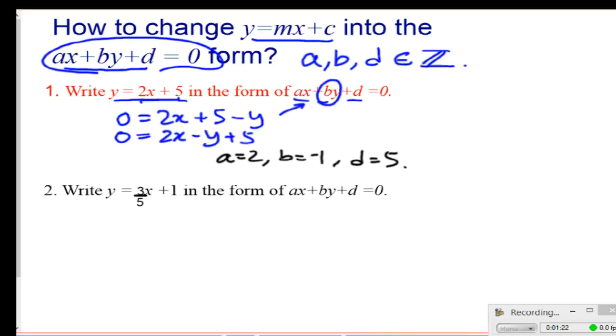Here is the next question, number 2. Now you need to write this linear function into this form. Remember that a, b, and d has to be integers, so let's check. I have the x and 1 is already here, so what I'm missing is by. So I need to move my y to the other side, so that means 0 = (3/5)x + 1 - y.